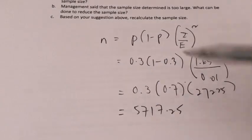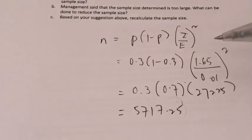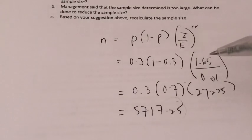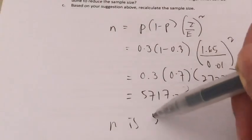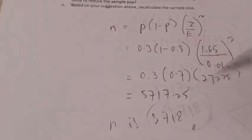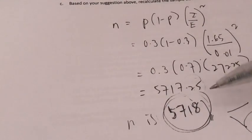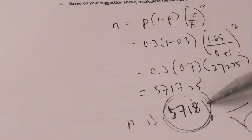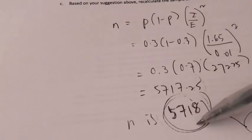Remember, just like before, we have a choice to either round it up or round it down. The same logic applies — we will want to make our sample size the bigger, the better. So here, the sample size would be n equals 5,718 — just round it up. However, the management said that the sample size is too large, so they asked: is there anything that can be done to reduce the sample size?